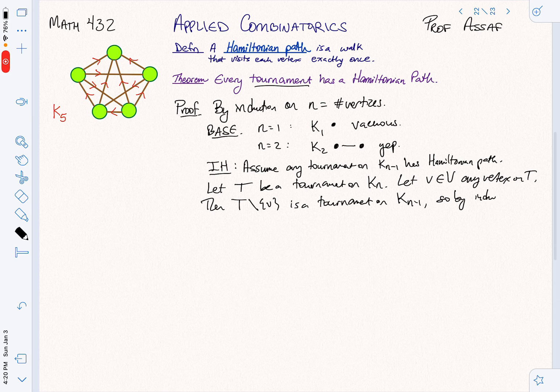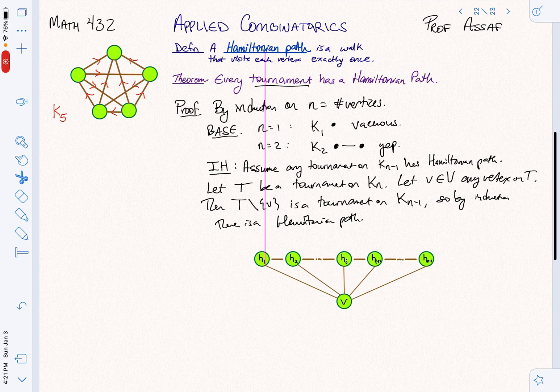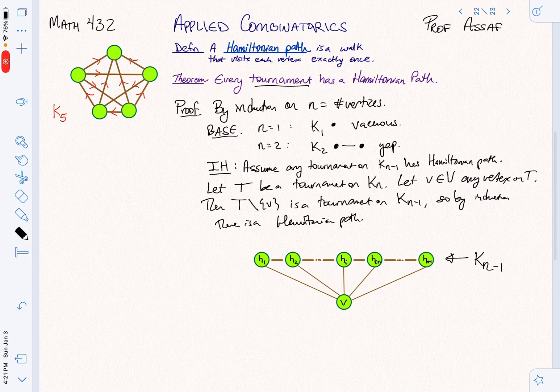So by induction, there is a Hamiltonian path. At this point, let's draw a picture. That usually helps. Here's a nice picture. These are the vertices on KN minus 1, and this is my Hamiltonian path.